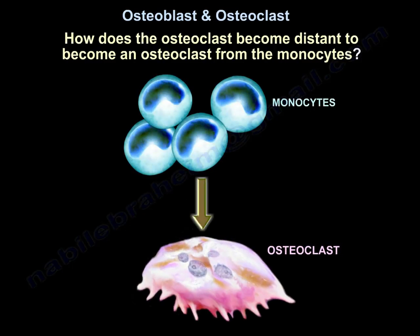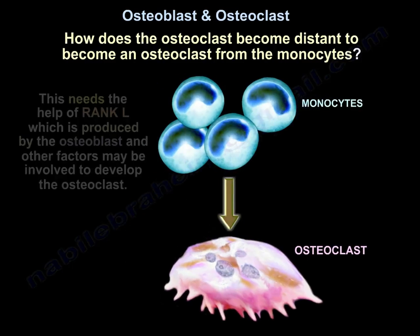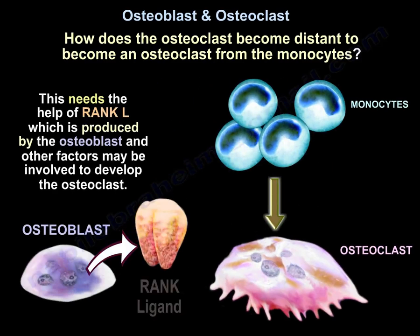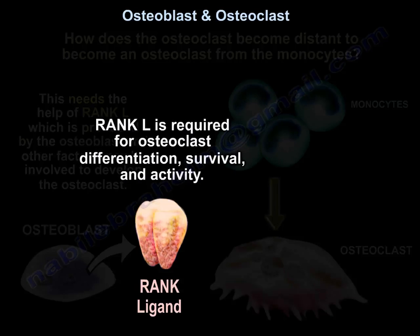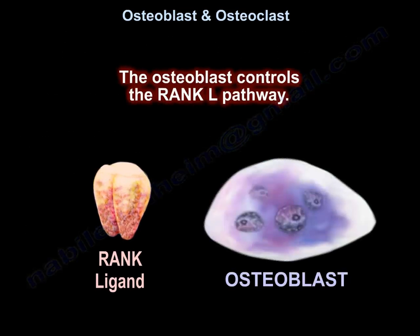That process needs the help of Rank-L, which is produced by the Osteoplast, and other factors may be involved to develop the Osteoclast. Rank-L is required for Osteoclast differentiation, survival, and activity. The Osteoplasts control the Rank-L pathway.